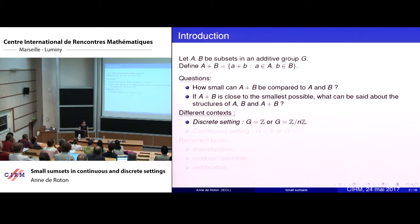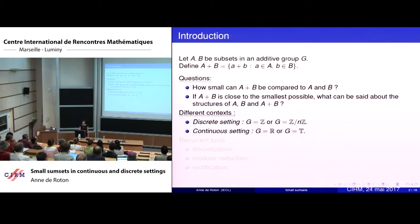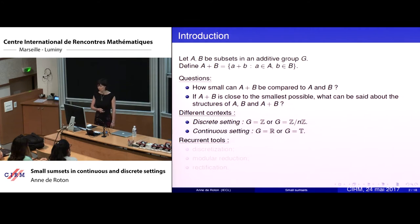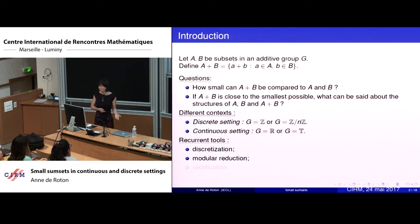I will be interested in two different contexts. The first is the discrete context, studying subsets in Z and in Z over NZ. In the continuous setting, we study subsets of R and subsets of T, which is R over Z. I will focus on different tools recurrent in the proofs: discretization, which transfers properties from discrete to continuous settings; modular reduction, transferring properties from T to R and from Z/NZ to Z; and rectification, transferring from R to T or from Z to Z/NZ.